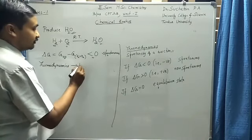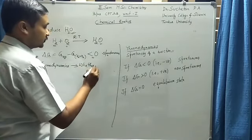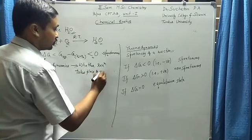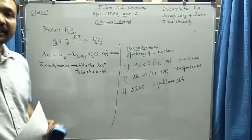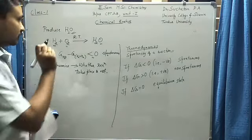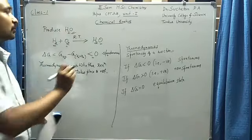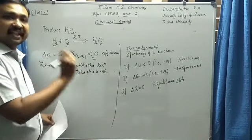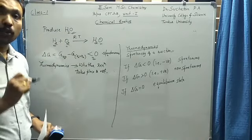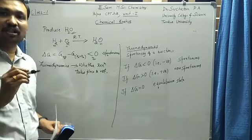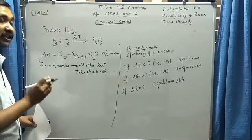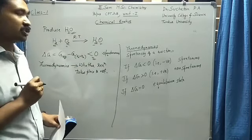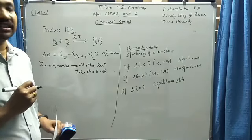But is our problem really solved? The answer is no. Because thermodynamics only tells us whether the reaction takes place or not. Thermodynamics can only give me a yes or no answer — if I mix hydrogen and oxygen, whether water is formed. According to the calculation, the answer is yes: water is produced. But what thermodynamics does not answer is the speed or rate at which this reaction takes place — how fast water is produced when I mix hydrogen and oxygen.